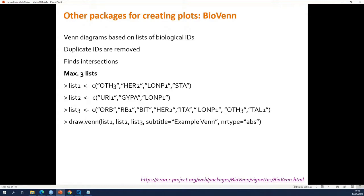Gene names, Ensemble IDs, or SwissProt IDs — you have multiple lists of gene names and you want to see how many correspond. Specifically for that application there is a package called BioVenn. The nice thing is that you simply give it your lists of genes, generated by analyzing RNA-seq data or proteomics data. You just give this package your lists and it will do all the calculations for you. The downside is you can only give it a maximum of three lists; if you have four, five, or six it will not work. But it's a really nice package.